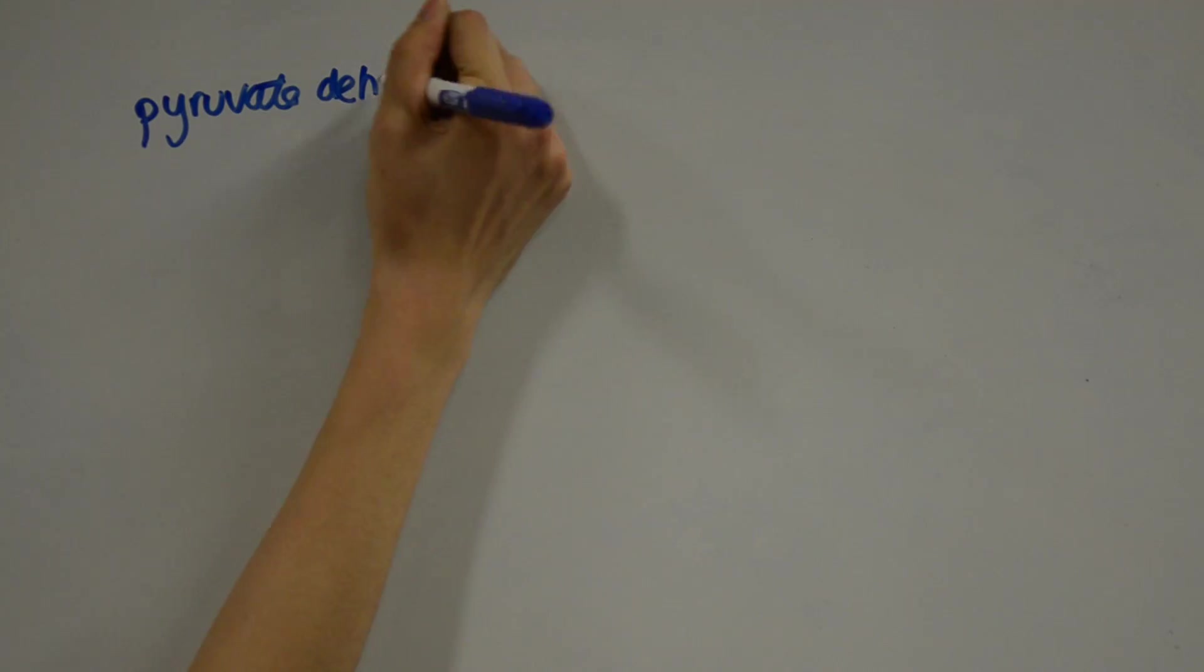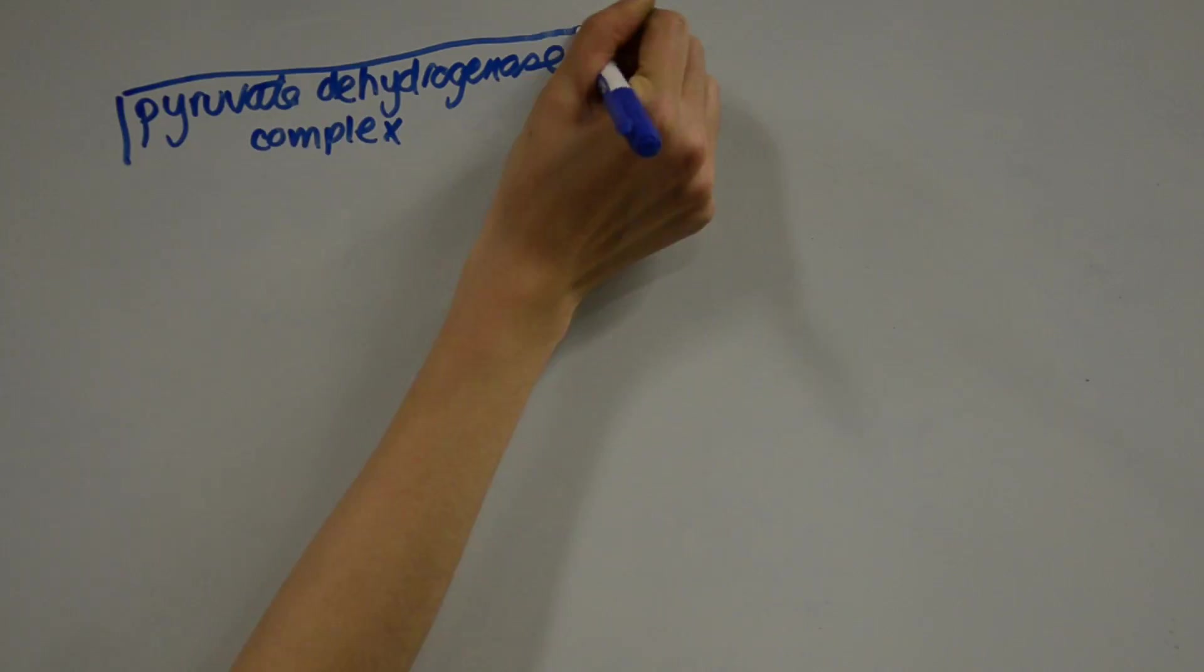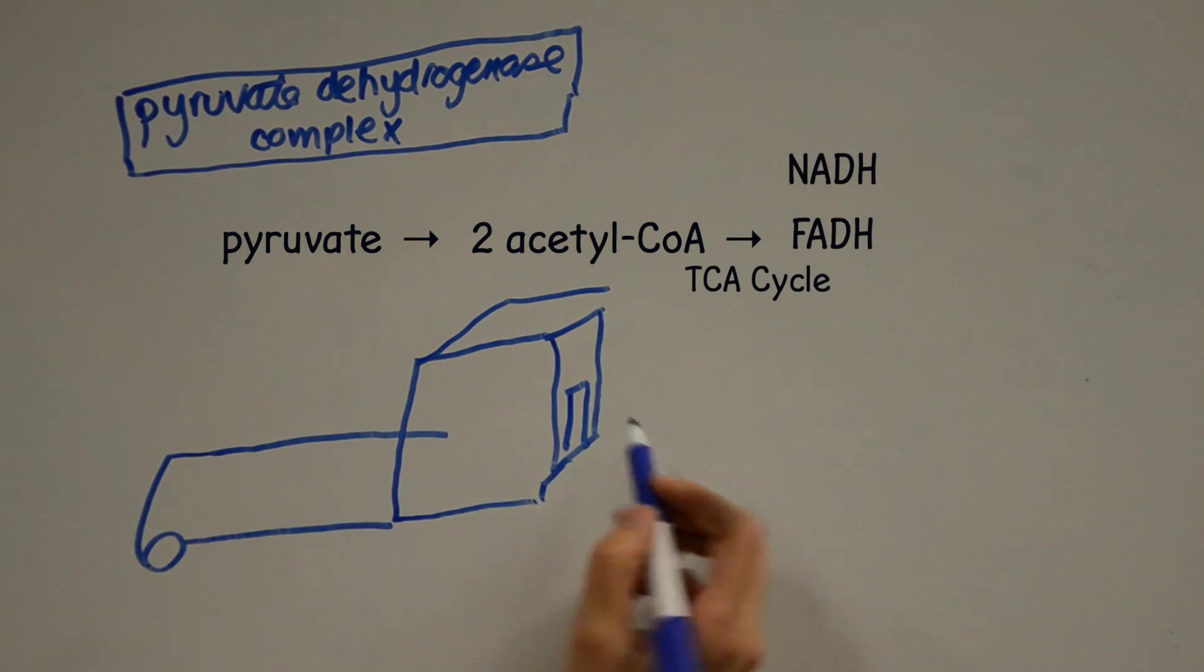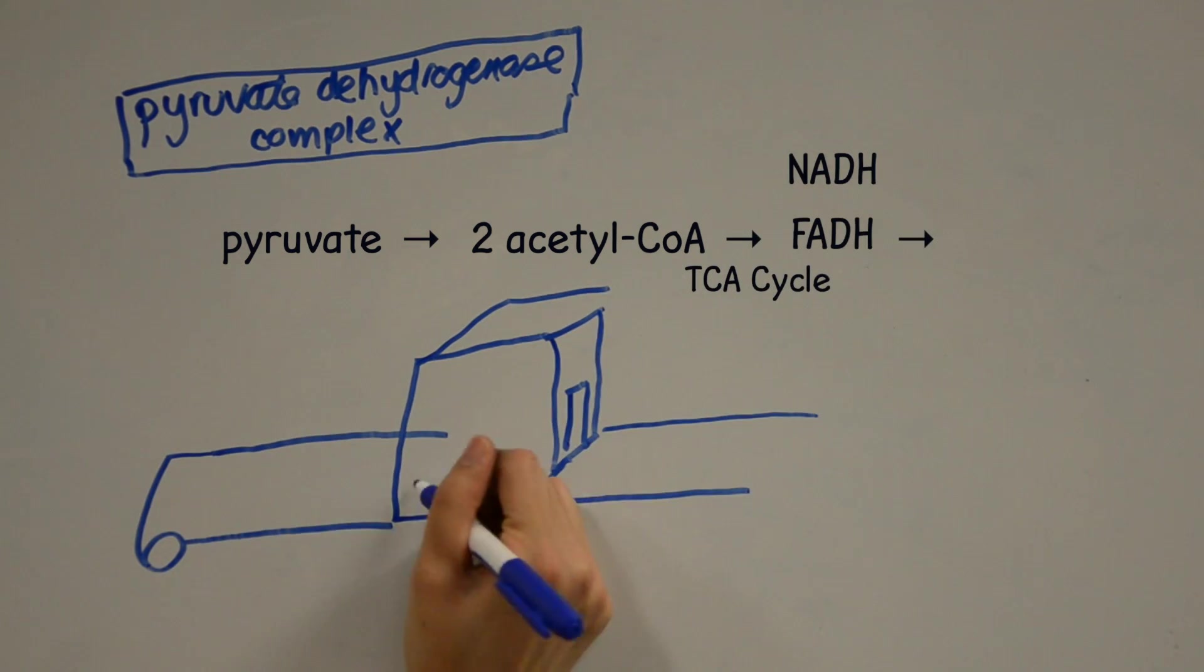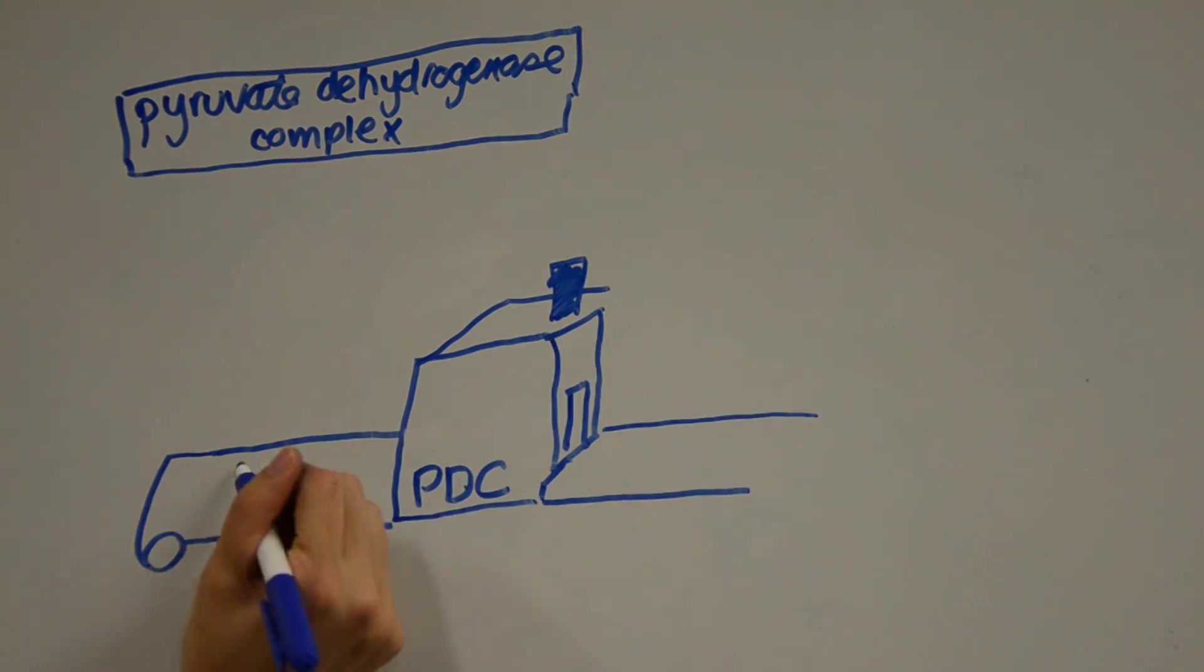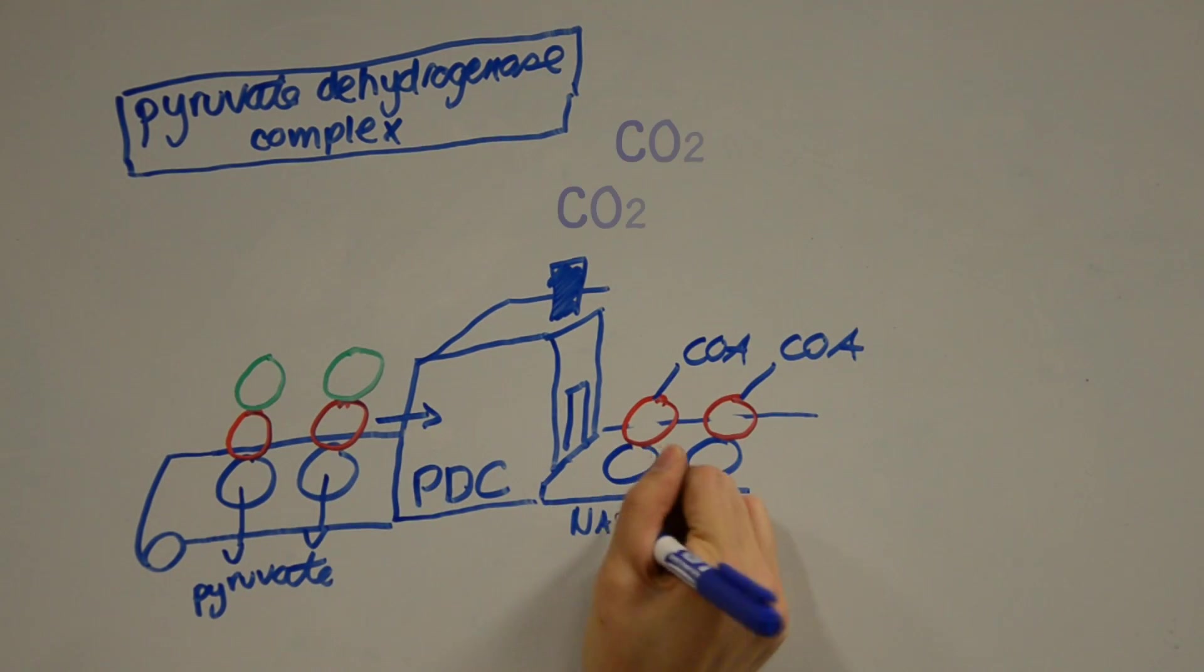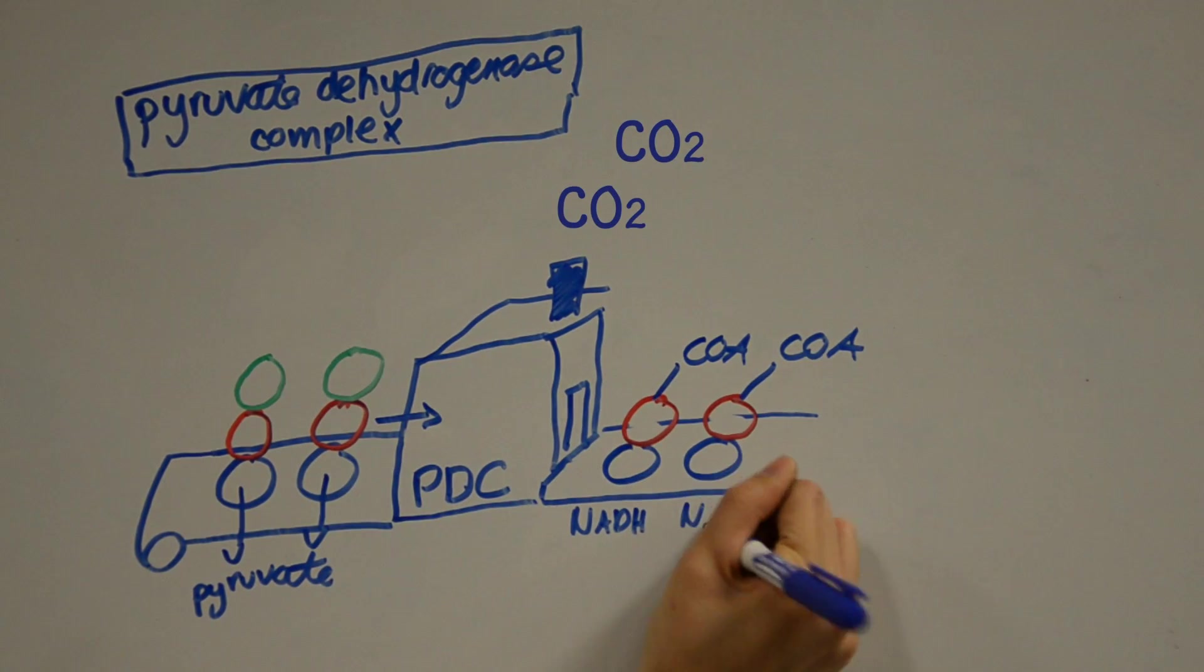Two pyruvate molecules then undergo pyruvate decarboxylation by pyruvate dehydrogenase complex, or PDC. PDC is able to transform pyruvate into acetyl-CoA, which is used in the citric acid cycle to produce NADH and FADH, which are reducing equivalents that generate ATP down the road. Pyruvate dehydrogenase catalyzes the oxidative decarboxylation of pyruvate to acetyl-CoA. This involves loss of CO2 molecule and the generation of NADH per pyruvate.